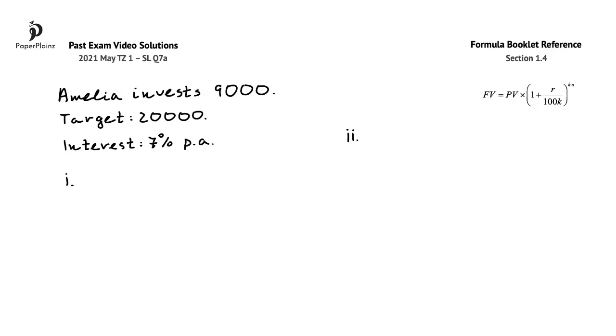In this question, Amelia and Bill each have $9,000 to invest. Their saving target is $20,000. In question part A, Amelia invests the $9,000 into an account that earns an interest of 7% per annum, compounded annually.